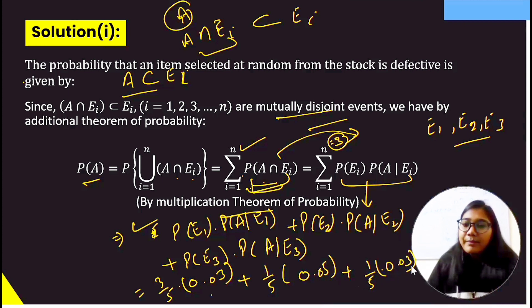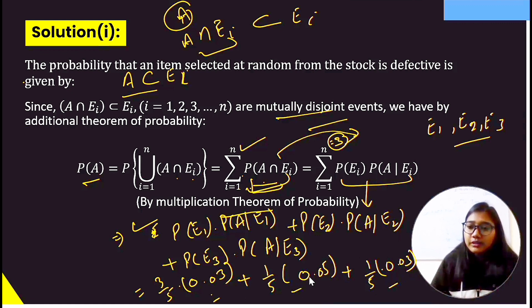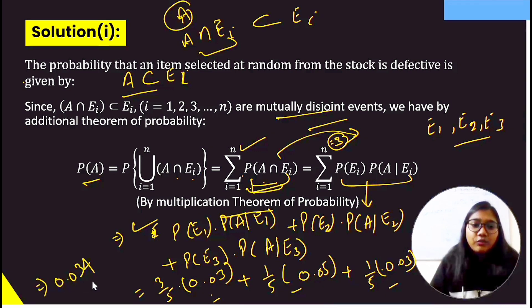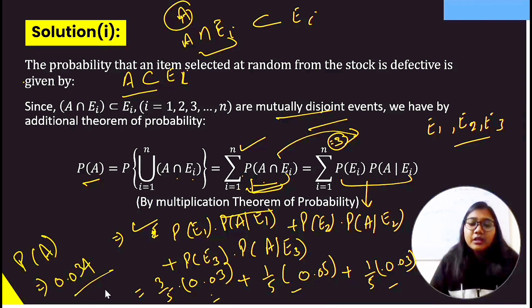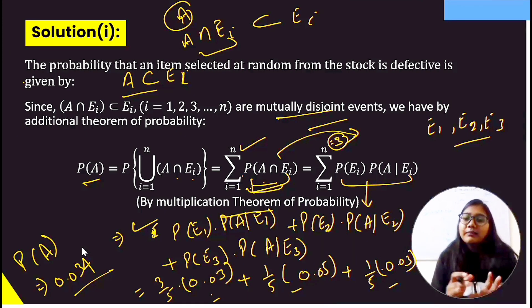Simplifying: P(A) = 0.018 + 0.01 + 0.006 = 0.034. So the probability that a randomly selected item is defective is 0.034.